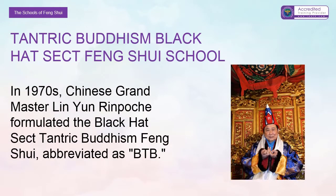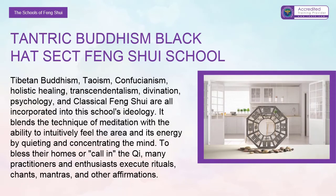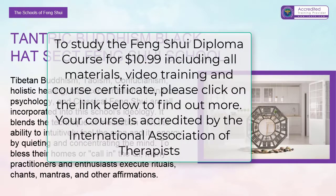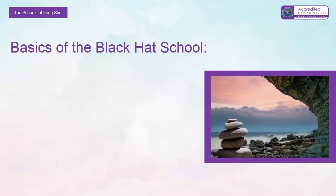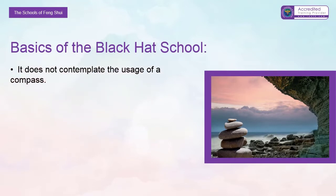Tantric Buddhism Black Hat Sect feng shui school: in the 1970s, Chinese Grandmaster Lin Yun Rinpoche formulated the Black Hat Sect Tantric Buddhism feng shui, abbreviated as BTB. Tibetan Buddhism, Taoism, Confucianism, holistic healing, transcendentalism, divination, psychology, and classical feng shui are all incorporated into this school's ideology. It blends the technique of meditation with the ability to intuitively feel the area and its energy by quietening and concentrating the mind. To bless their homes or call in the chi, many practitioners execute rituals, chants, mantras, and other affirmations.